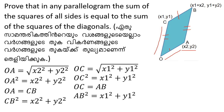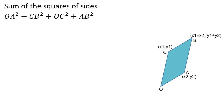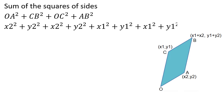Now we have all the squares to add. OA squared equals CB squared, and OC squared equals AB squared. OA squared plus CB squared equals x₂ squared plus y₂ squared, and OC squared plus AB squared equals x₁ squared plus y₁ squared.